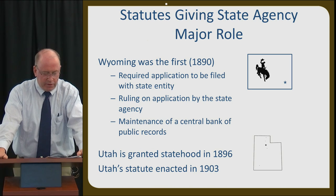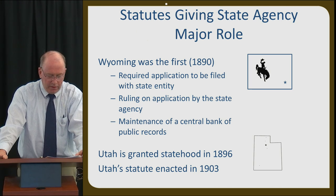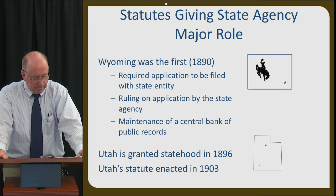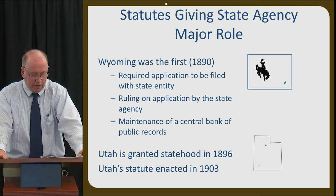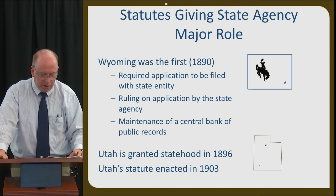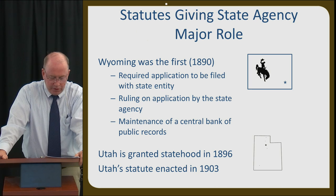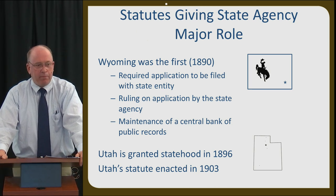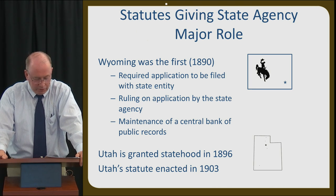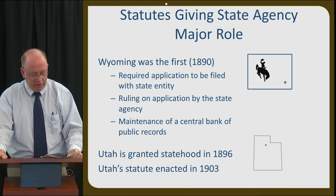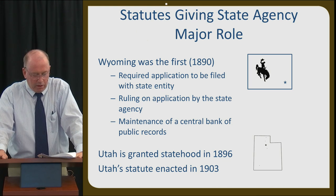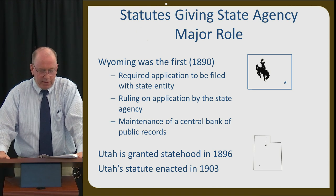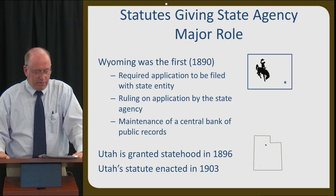Wyoming was the first among the states to give a state agency a major role in administrating appropriative water rights. The key features of the Wyoming system were: one, the requirement that an application must be filed with a state entity before a right could be created; two, the necessity of ruling on an application by the state agency, including denying a permit where no water was available; and three, the maintenance of a central bank of public records containing applications which had been made. Wyoming's first surface water laws were enacted in 1875, and more comprehensive laws were adopted along with the state constitution in 1890. Although western states embraced the doctrine of prior appropriation, each state adopted laws and policies to best administer water within their state.